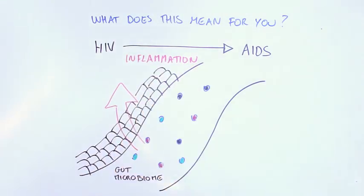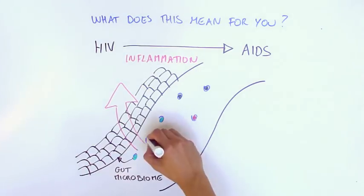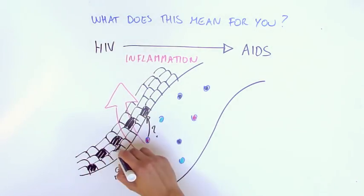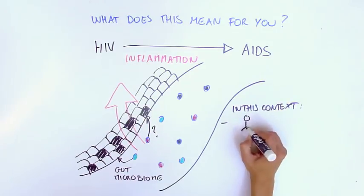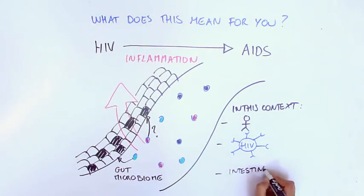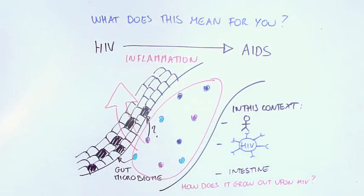Is the disease-associated bacterial community actually damaging the immune barrier in HIV individuals in this context, in humans with HIV infection and in the intestine? And how does this community grow out in an HIV-infected person?